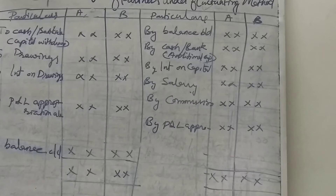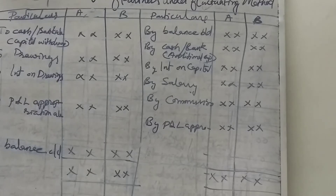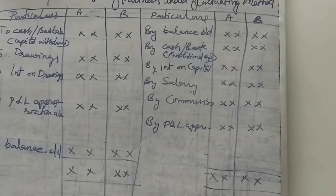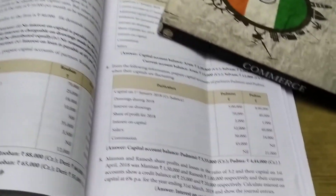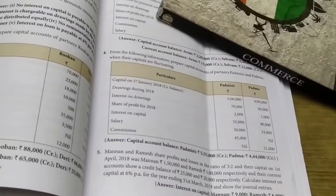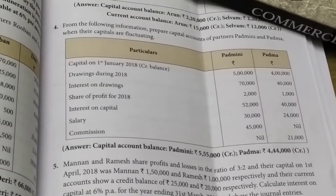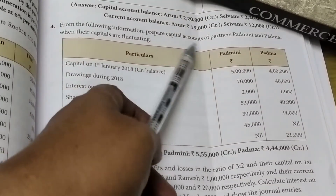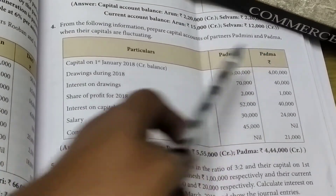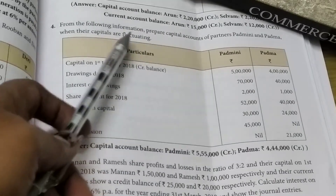Now we can go to exercise 4. Let me read the question: from the following information, prepare capital accounts of partners Padmini and Padma when their capitals are fluctuating — so fluctuating capital method.